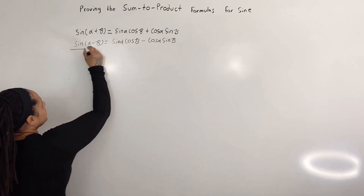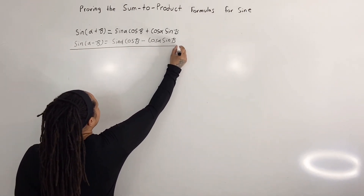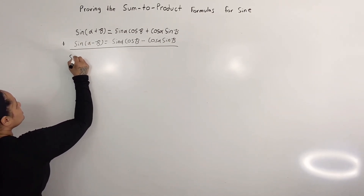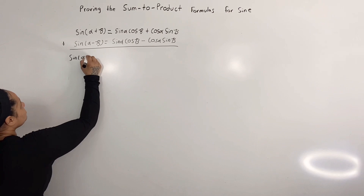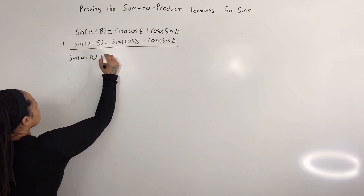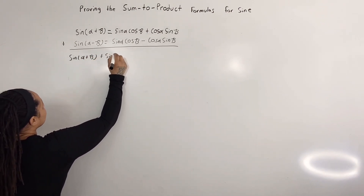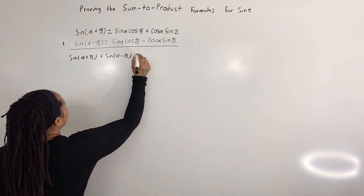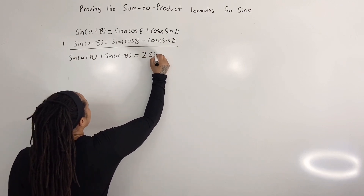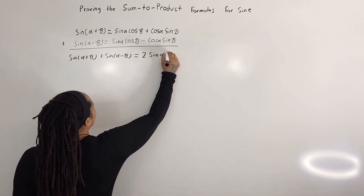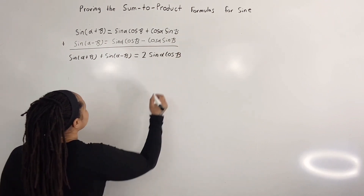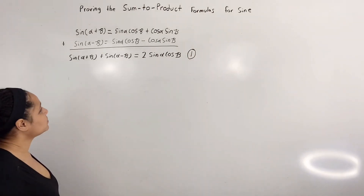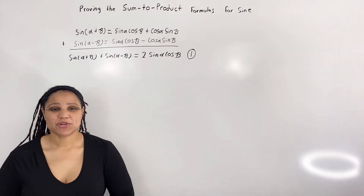What I'm going to do is add these two equations together, and we will get: sine of (α + β) plus sine of (α − β) is equal to 2 sine of α cosine of β. I'm going to call this equation one, and we will use it later.